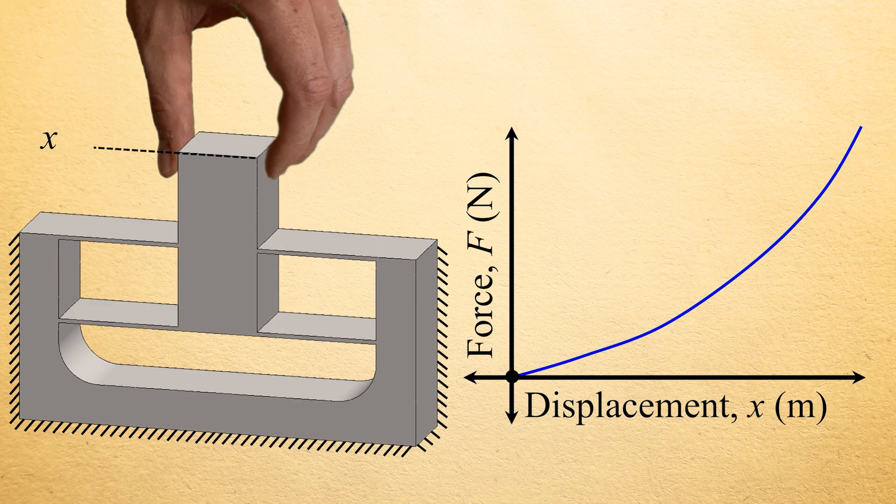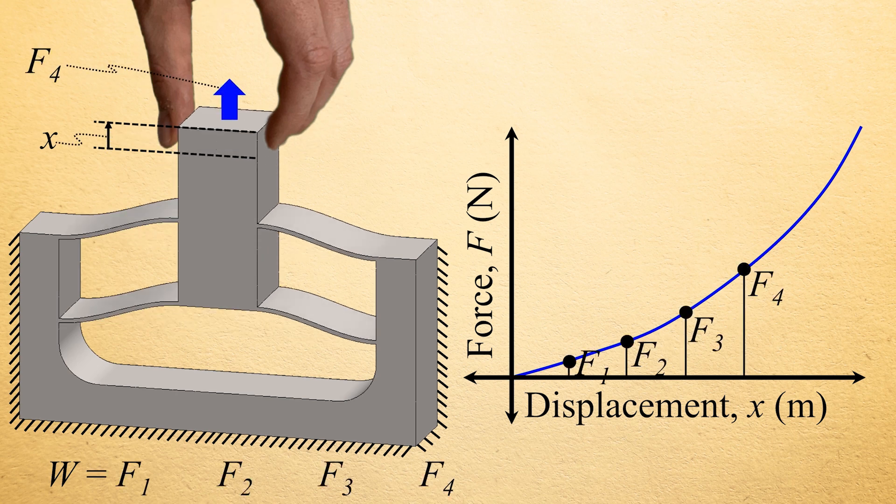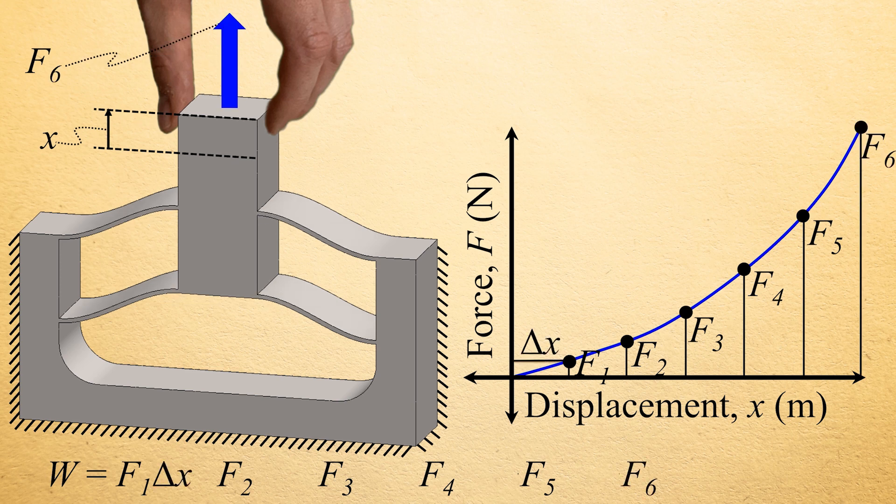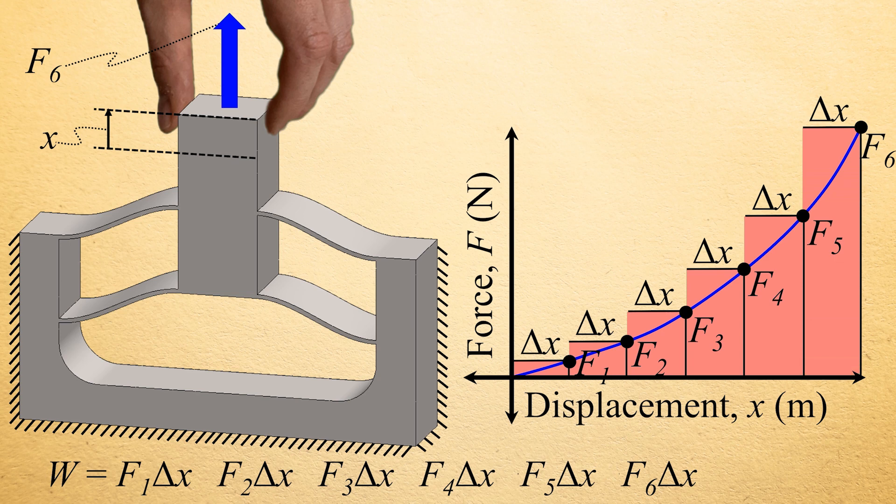Thus, to calculate the total work performed on a spring that is being displaced along a straight path by a changing force, the magnitude of the force at every location along the path should be multiplied by the corresponding displacement length over which each force acts, and the resulting work increments should be summed together along the entire path.